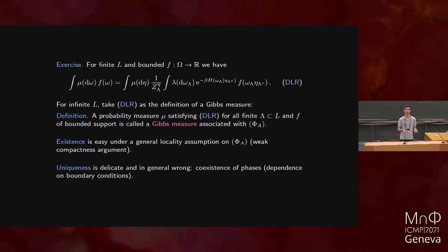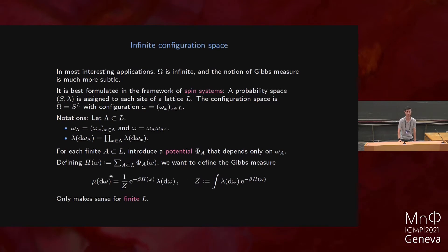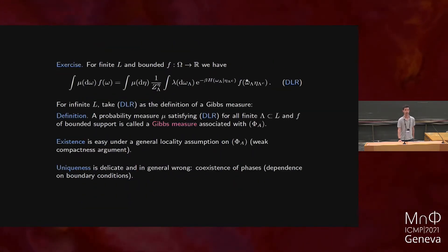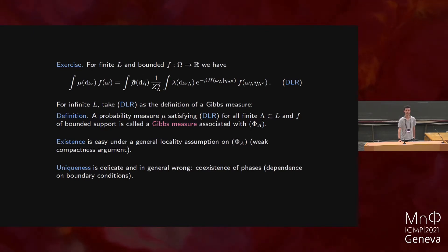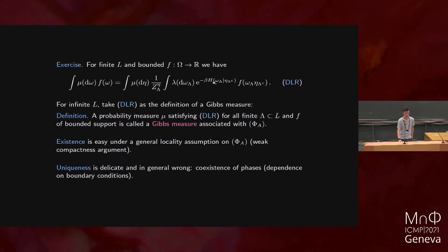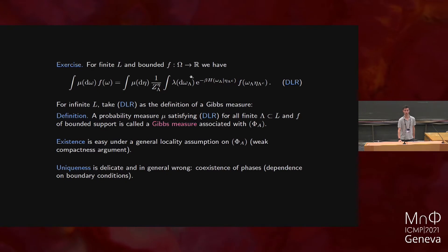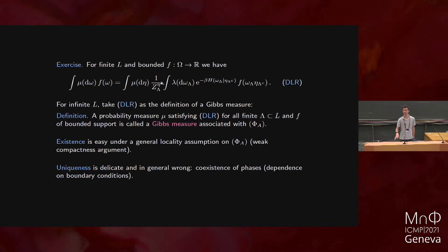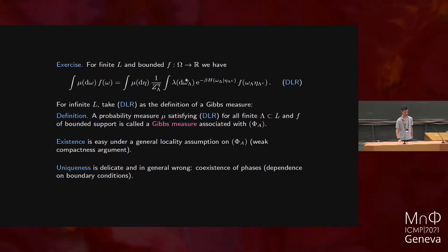There is a fantastic observation by DLR called the DLR equation — I'll leave it as an exercise, it's just a computation, half a page. If you take a finite lattice L, the Gibbs state makes complete sense. And you can verify: integrating some observable F with respect to mu is the same as first integrating the boundary conditions, then treating them as fixed and integrating F with respect to the conditional Gibbs measure. This equation, for finite lambda, makes sense even for infinite lattices. So we define a Gibbs measure on an infinite configuration space as any probability measure satisfying this equation for all finite subsets lambda.